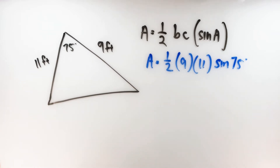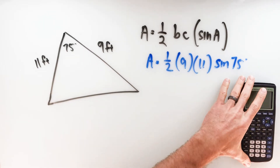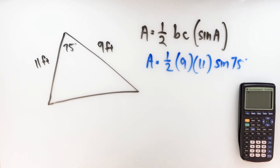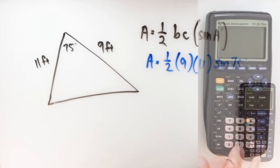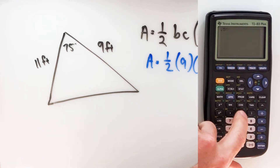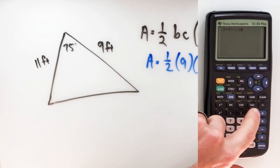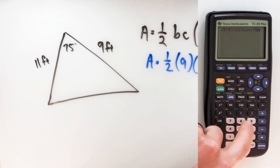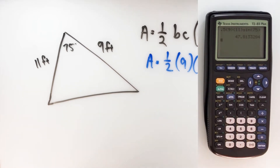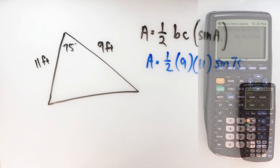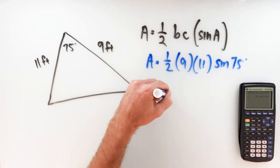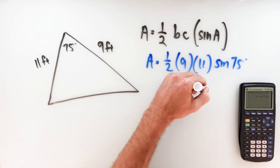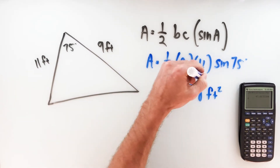At this point we just go to our calculator and plug this information in. Depending on which calculator you have, you can type this in all the way through. I have a graphing calculator here, so I'm going to write it as 0.5 times 9 times 11 times sine of 75 degrees. And it shows we've got an area of 47.8.